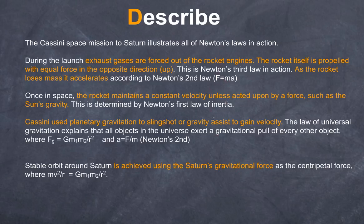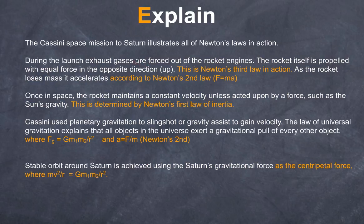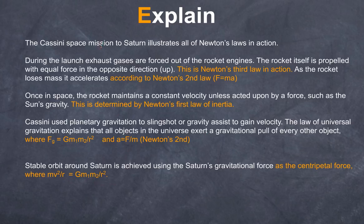Good physics concepts are described here, but once you've described them you need to explain — what's the reason behind those descriptions? In the case of launch, we have an application of Newton's third law, and also Newton's second law — as mass decreases due to loss of fuel, acceleration increases. Constant velocity to Saturn is explained by Newton's first law of inertia. When in orbit, the centripetal force is provided by gravitational force. Throughout this answer the student has started by identifying, then describing, and then explaining.